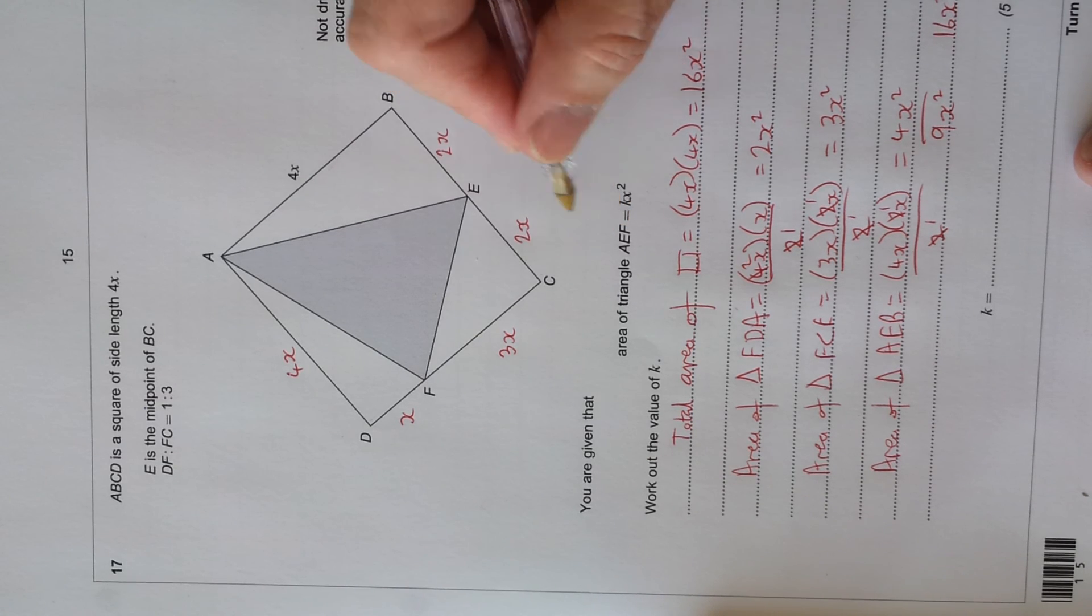But the question said the area of the triangle is kx squared, and we want to know k. So we've got 7x squared, so k is just 7. And that's it. Not too bad.